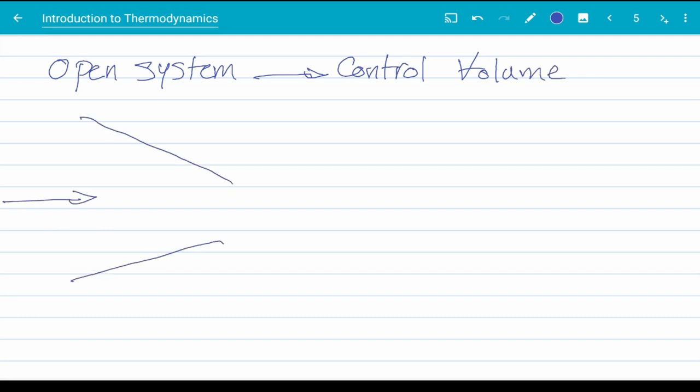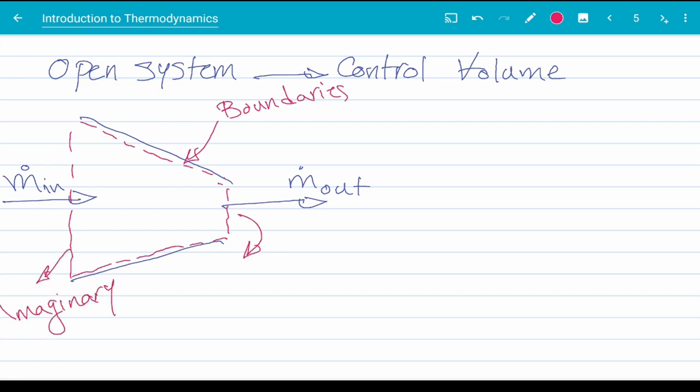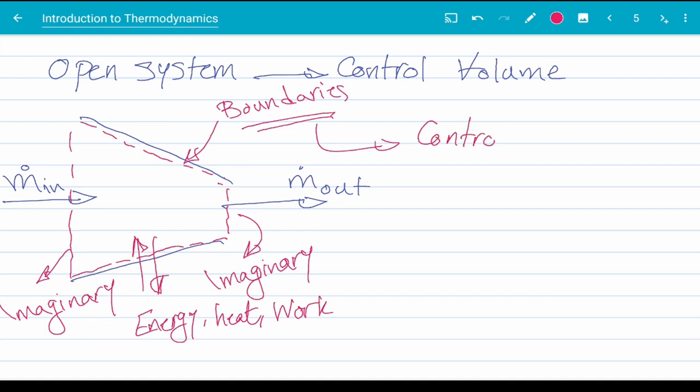Now consider this nozzle for example. Fluid with mass flow rate in is entering from left and exits from right. These red lines again show the boundaries of our system, or control volume in this case. But take note that two of these boundaries, on the left and on the right, are actually imaginary. So boundaries don't need to be actual solid objects. They can be imaginary. Work, heat, and energy, in general, can cross the boundaries, no problem. We sometimes call the boundaries of a control volume control surfaces. Again, they have no mass and no thickness.